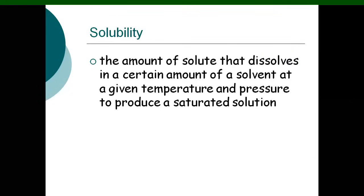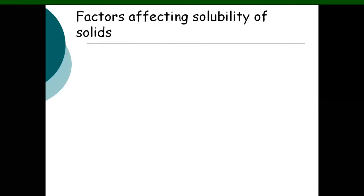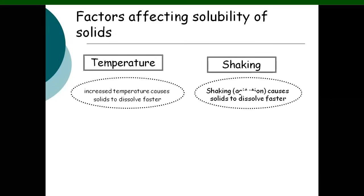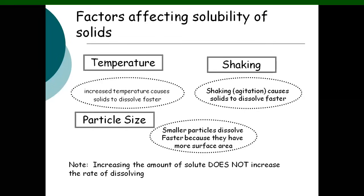Solubility is the amount of solute that dissolves in a certain amount of solvent at a given temperature and pressure to produce a saturated solution. Factors affecting solubility of solids: temperature — increased temperature causes solids to dissolve faster; shaking — that can also cause solids to dissolve faster; and particle size — smaller particles dissolve faster because they have more surface area. Increasing the amount of solute does not increase the rate of dissolving.